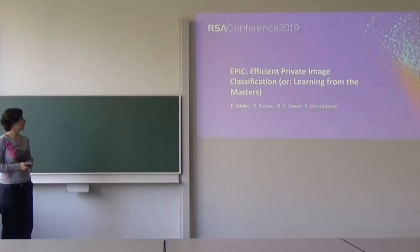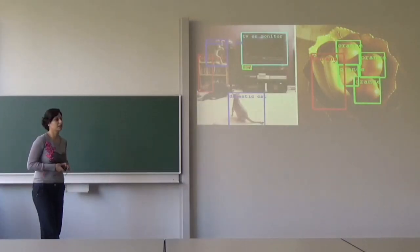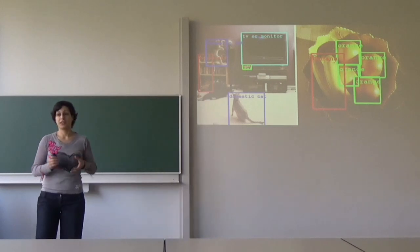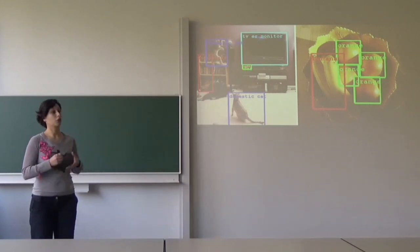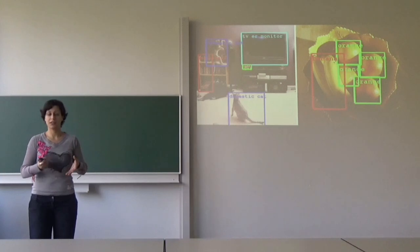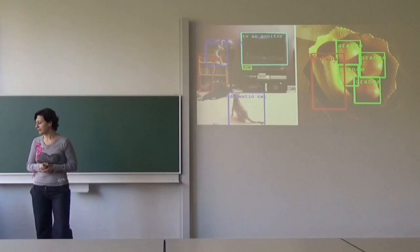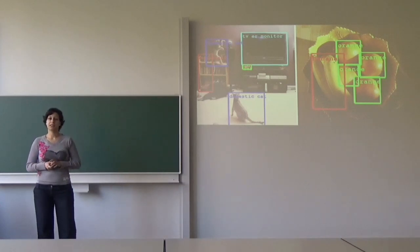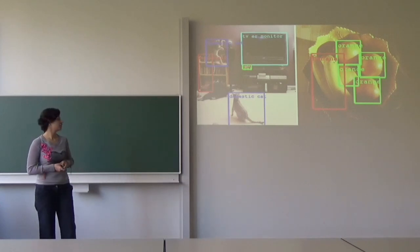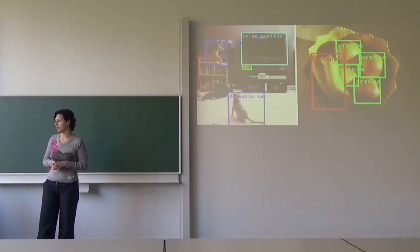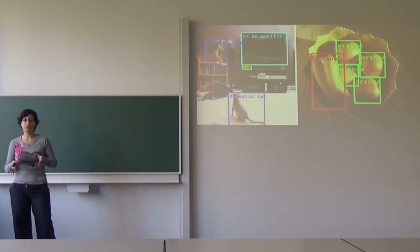It's all about image classification, which is a problem that we see all over the place. Application scenarios such as autonomous driving, for example, require very good image classification algorithms. But the problem is that in many of these application scenarios, we need to preserve the inputs of the involved parties private, and that's what we are trying to address with EPIC.